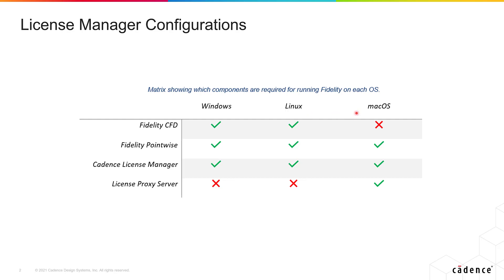Things change a little bit when you're using a Mac operating system. First off, you cannot install Fidelity CFD on a Mac computer. You can however install Fidelity Pointwise on a Mac, and you're also going to need the Cadence License Manager and the License Proxy Server. So if you're using a Mac you're going to need that extra element — the License Proxy Server.